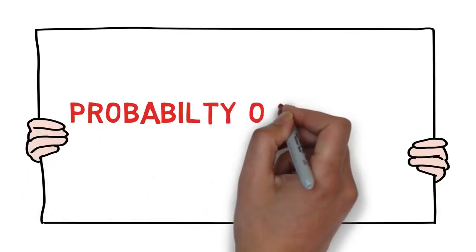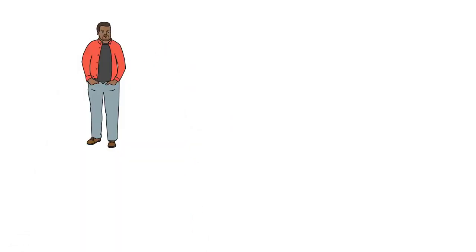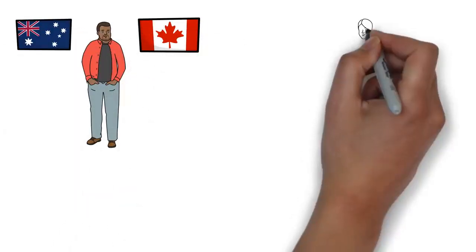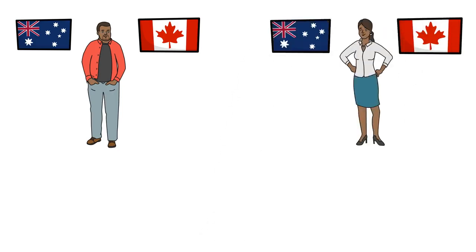The second point is the probability of getting an invitation. Even if you're eligible, you need to consider how long it will take to get your PR. A five-year process is something nobody wants. For example, if you have around 65 points — the minimum eligibility for Australia — and around 460 points in the Canadian system, you're eligible for both, but in Australia you may wait a year or more for an invitation.